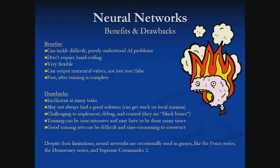Neural networks can be challenging to implement, debug, and control — they get the term 'black boxes' very often. It's very hard to see exactly what's going on inside, especially during training: is it getting better, do we keep training, or are we wasting time due to an error? Training can be very time intensive depending on how large our network is and how much data we need. This is usually not something the end user should see — the training happens behind the scenes.